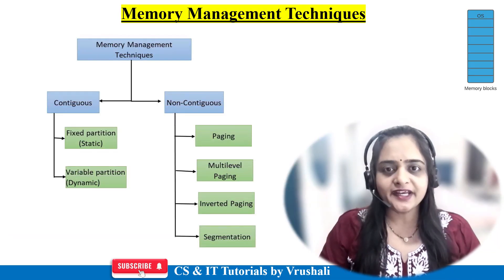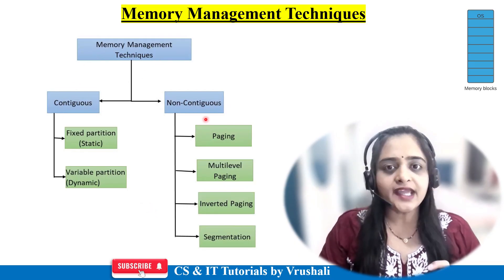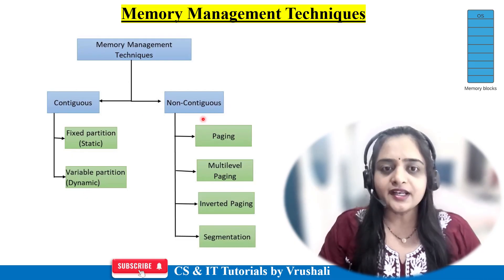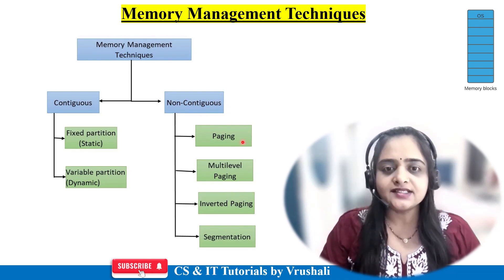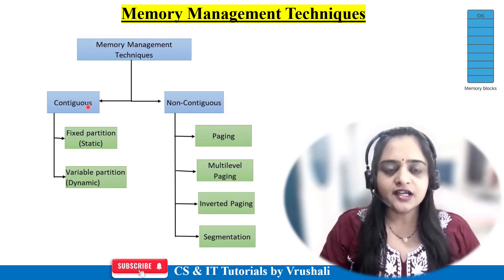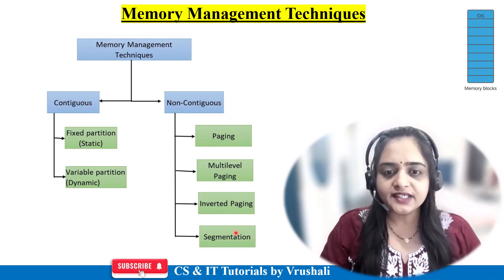The next topic is memory management techniques. In this diagram, memory management techniques are divided into two parts: contiguous memory and non-contiguous memory. Contiguous memory is further divided into fixed partition and variable partition, also called static and dynamic partition. Non-contiguous memory is divided into paging, multilevel paging, inverted paging, and segmentation. In today's session we will discuss contiguous memory and its types, and briefly introduce non-contiguous memory. Paging and segmentation will be covered in detail in the next lecture.